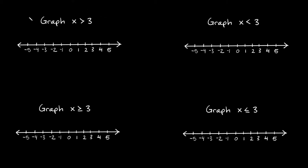Let's start with this first example on the top left. It says graph x is greater than 3. Something really key to point out right now is: whenever you see a greater than symbol or a less than symbol, when graphing these you're going to use an open circle. On the other hand, whenever you see greater than or equal to, or less than or equal to — whenever there's that equal to thing attached — you're going to use a closed or filled-in circle.